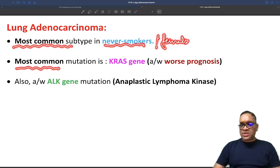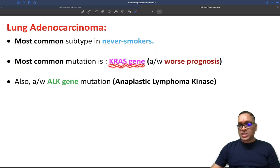The most common mutation in this patient will be the KRAS gene mutation. And whenever you find KRAS gene mutation, they will be having worse prognosis.